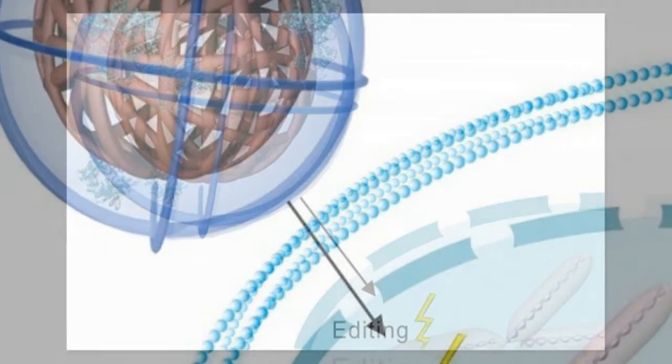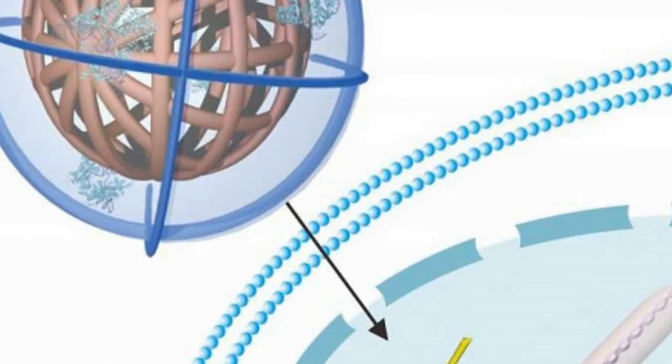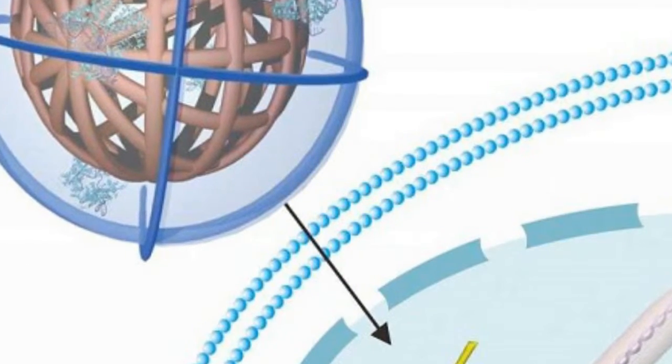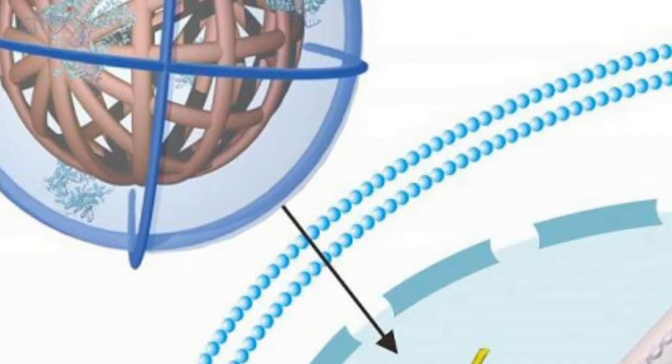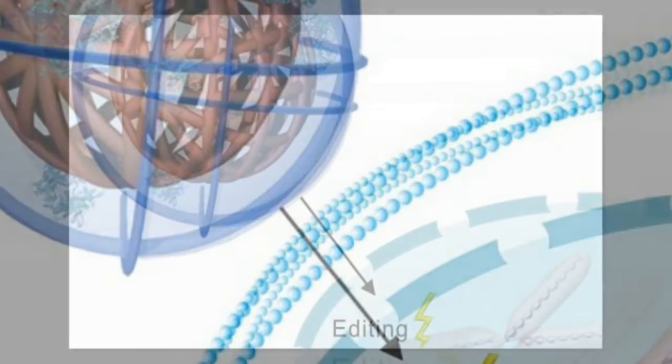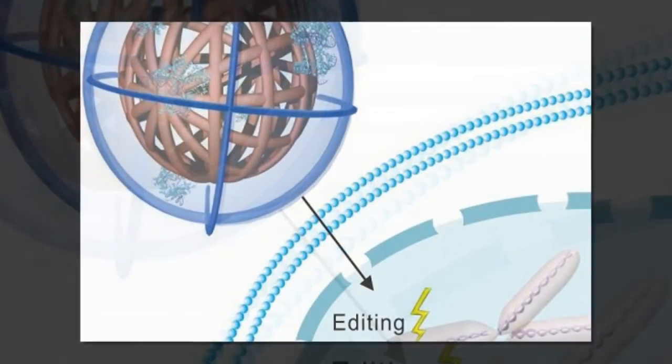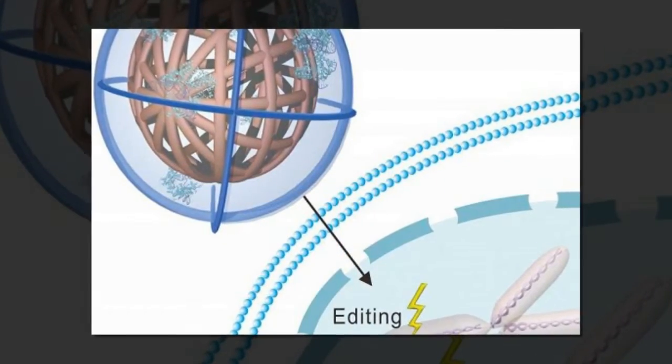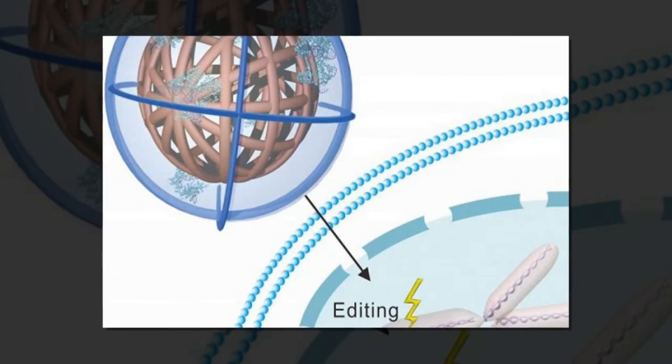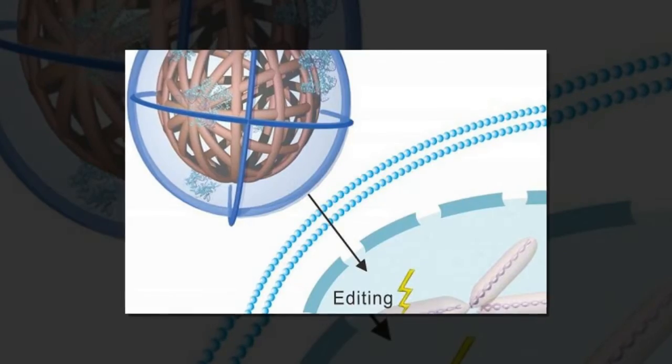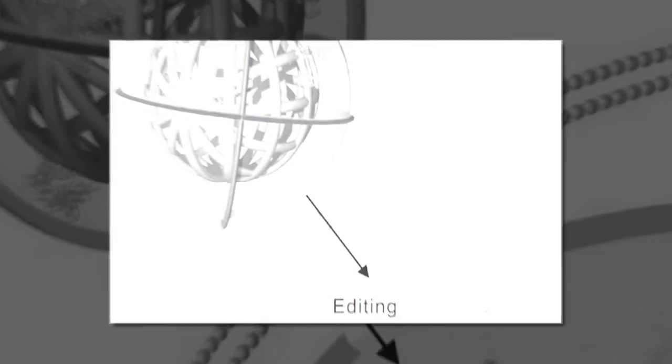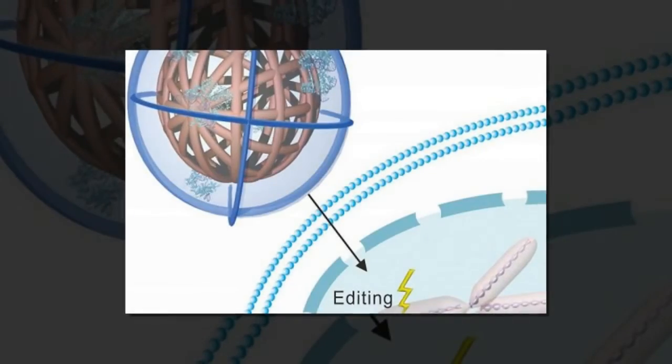The CRISPR-Cas system, which is found in bacteria and archaea, protects bacteria from invaders such as viruses. It does this by creating small strands of RNA called CRISPR-RNAs, which match DNA sequences specific to a given invader. When those CRISPR-RNAs find a match, they unleash Cas9 proteins that cut the DNA.